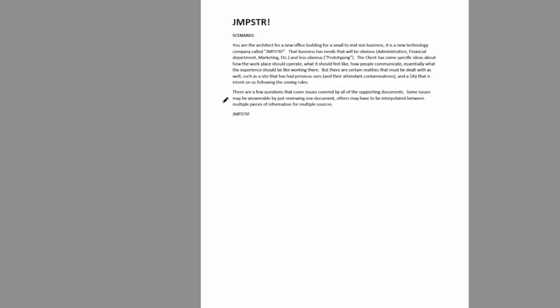The first thing to do is read the scenario. You are the architect for a new office building for a small to mid-sized business — a new technology company called Jumpster. That business has obvious needs like administration, financial departments, and marketing, and some less obvious ones like prototyping. The client has specific ideas about how the workplace should operate, what it should feel like, and how people should communicate. But there are certain realities to deal with as well, such as land use, zoning issues, and contaminants — that's what's represented in these different tabs.